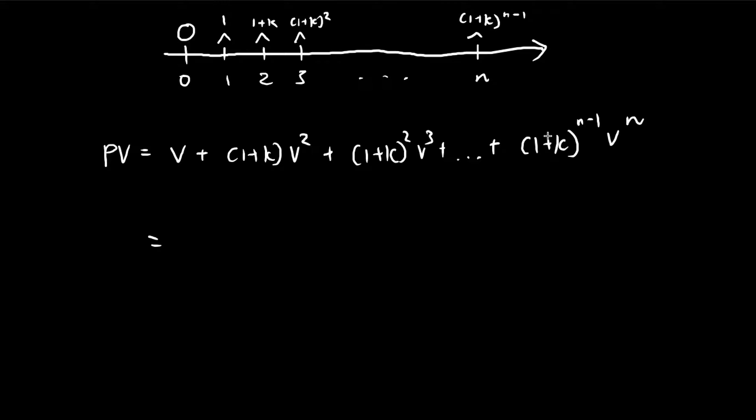We're going to use the formula for geometric series. The formula is given by this expression. a is the first term in the series, so in our case it's v. r is the common ratio, the ratio that each successive term increases by. To go from this term to the next term,